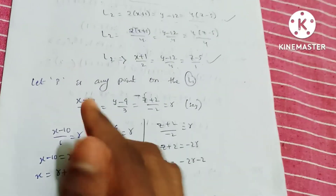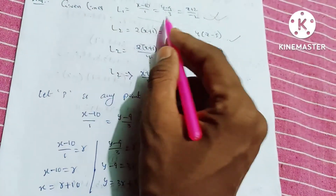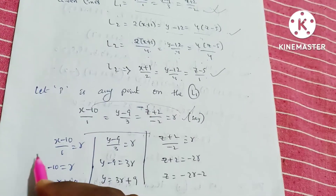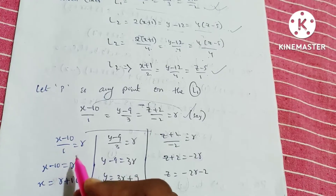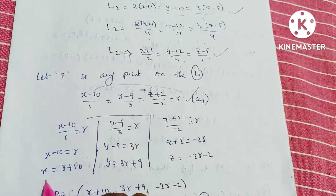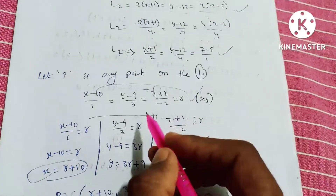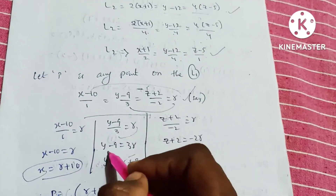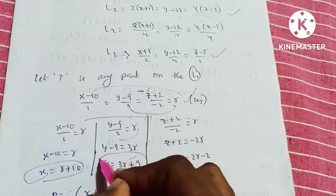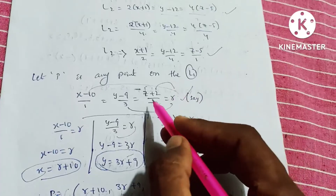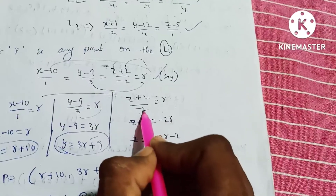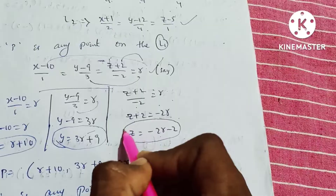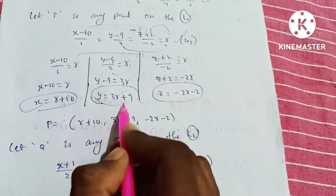Let P be any point on line 1. The line 1 equation gives us the parametric form. x minus 10 by 1 equals r, so x equals r plus 10. For y: y minus 9 by 3 equals r, so y equals 3r plus 9. For z: z plus 2 by minus 2 equals r, so z equals minus 2r minus 2. So we have x, y, z values and P equals (r+10, 3r+9, −2r−2).